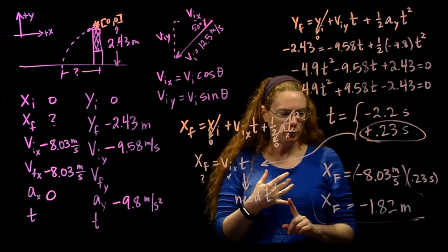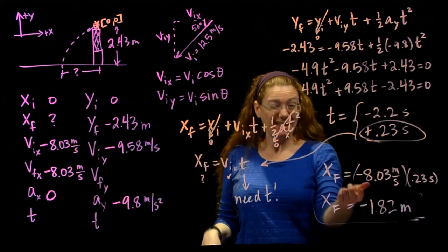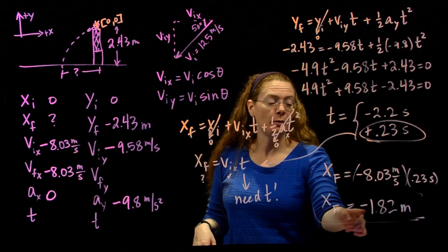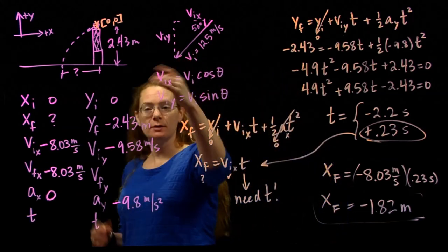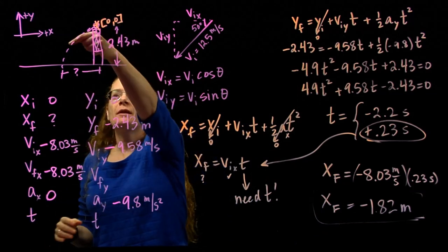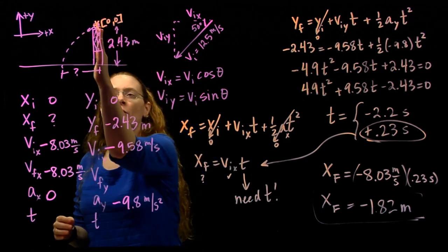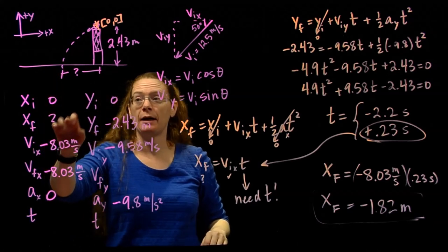1.82 meters, that's about this, yeah, that's reasonable in terms of the distance. Negative? Should my answer be negative? Let's go back and look at my picture. This is another reason why the picture is useful. So I started here and I'm moving that way. Yeah, if this is my origin, I end up left of the origin. So I'd better have a negative x final.